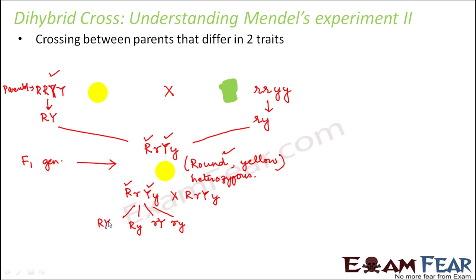Now, how come you are getting four possible gametes? These four possible gametes are possible because they are all segregating independently. For example, if you only talk about the shape of the seed, the shape can be round or wrinkled — round and wrinkled are getting segregated independently. Similarly, the color of the seed can be yellow or green, and they also get segregated independently. They do not depend on each other. It is not necessary that capital R always has to be with yellow. So there is no such compulsion — they are all segregating independently, and that is why we are getting four gametes.